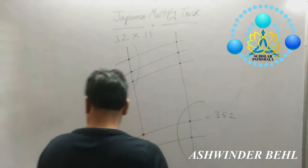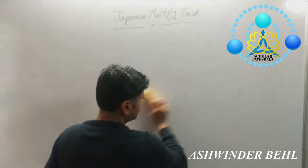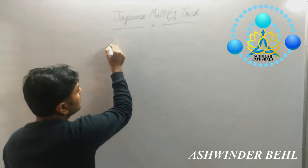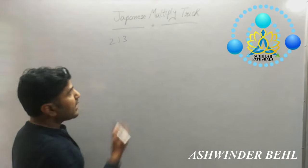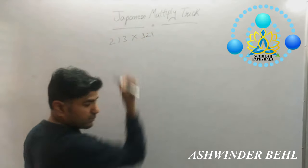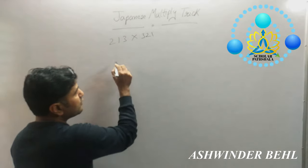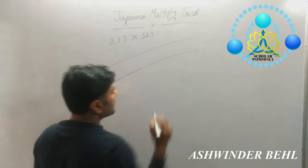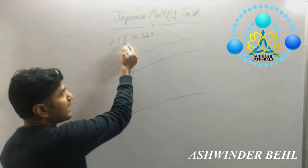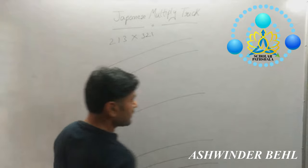Same process you can use to multiply. Suppose if you have 3-digit numbers — for example, 213 multiplied by 321. Any number you will take, the same process we will do. First digit is 2, so you will draw 2 lines. Next digit is 1, so again you will draw 1 line. Next digit is 3, now you will make 3 lines this way.